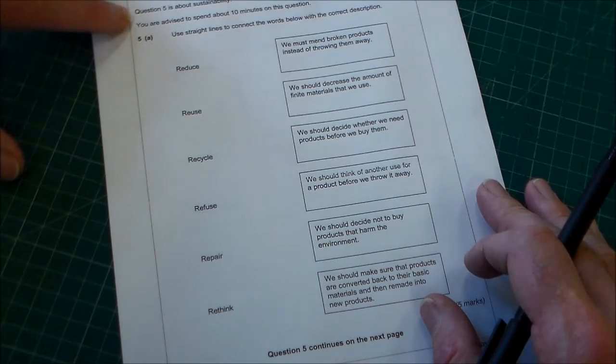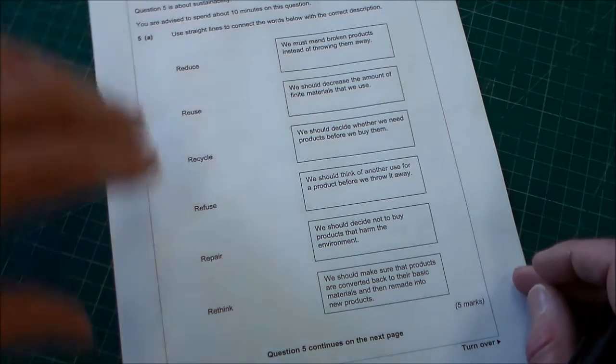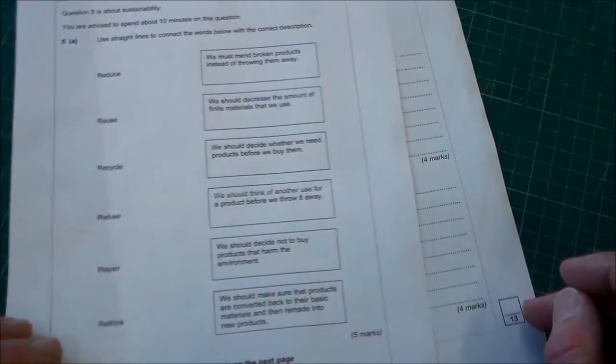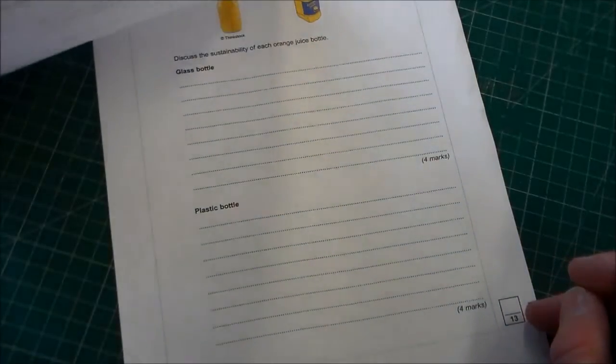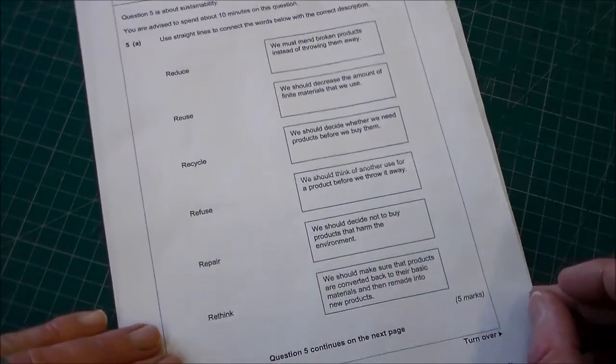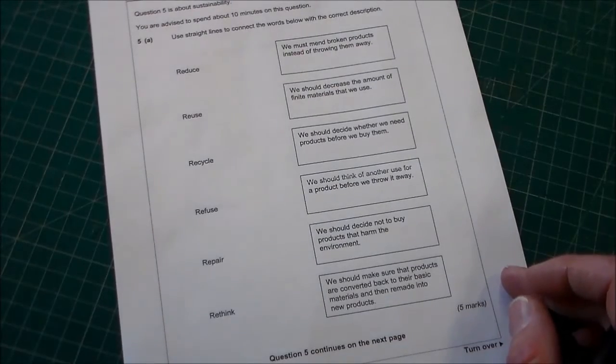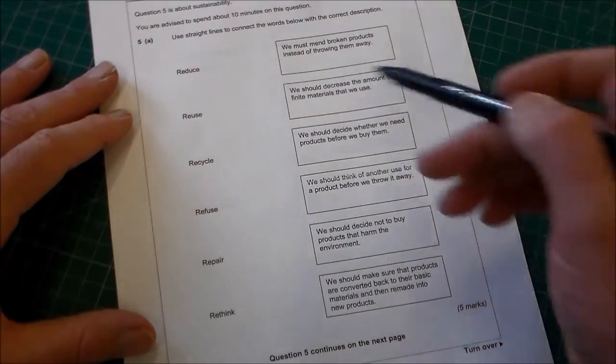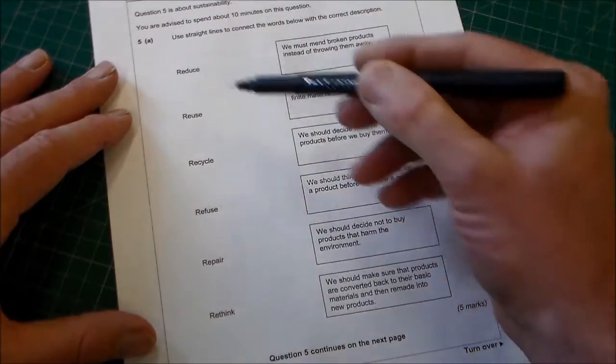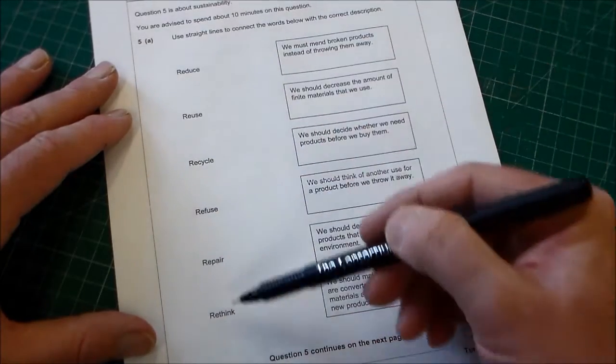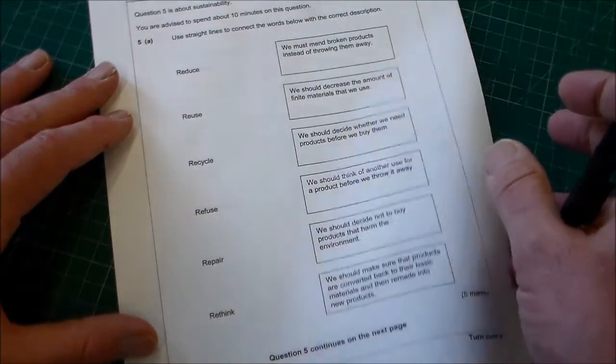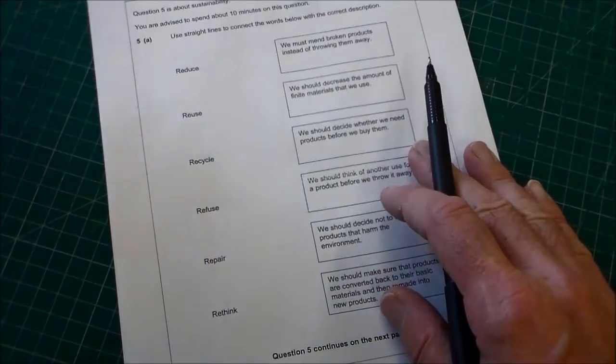On here it says question five is about sustainability. You're advised to spend ten minutes on this question and we've got five marks. It's a total of thirteen marks. So ten minutes, thirteen marks. What we've got here is some boxes with descriptions and the six Rs down here which we talked about in my previous video.